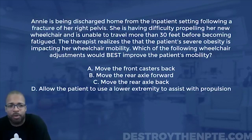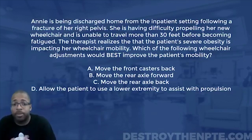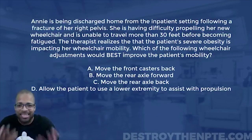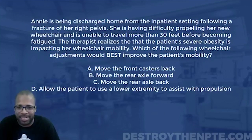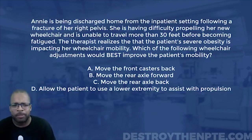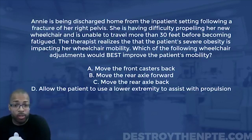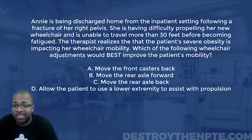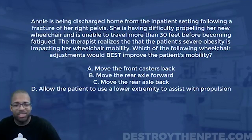The therapist realizes that the patient's severe obesity is impacting her wheelchair mobility. Severe obesity is typically classified above 35 on the BMI scale, but that doesn't matter too much here. What matters is that the patient's weight is affecting wheelchair mobility, and that gives us insight into what we need to do as a physical therapist in this situation. The question asks which wheelchair adjustment would best improve the patient's mobility.